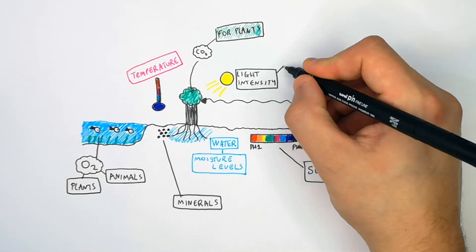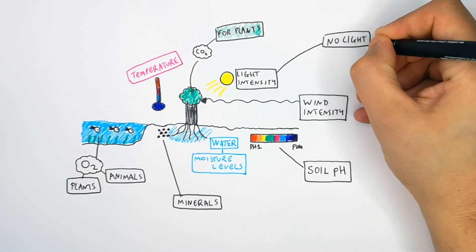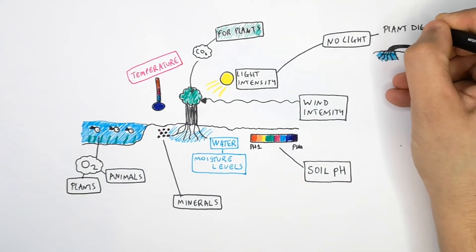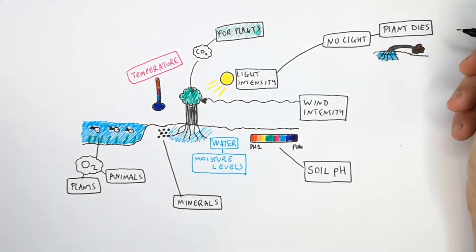If there is no light or not enough light, the plant cannot photosynthesize so it can die or not grow enough.